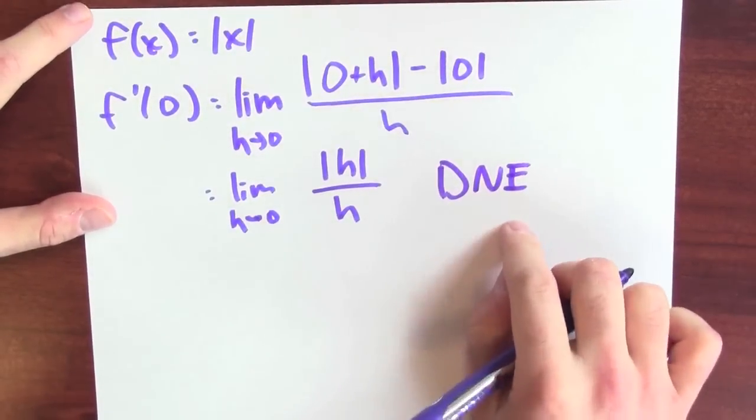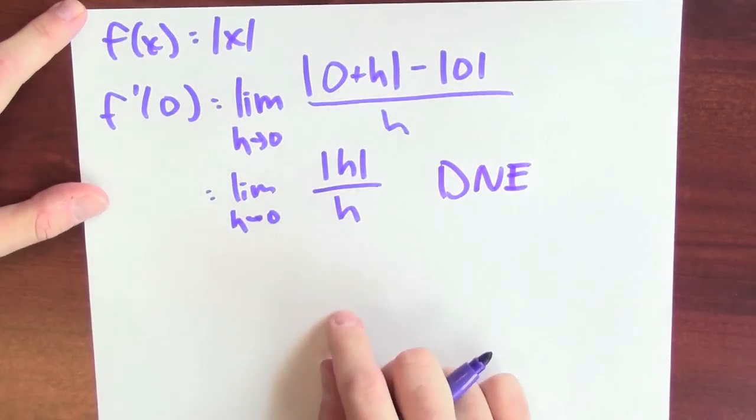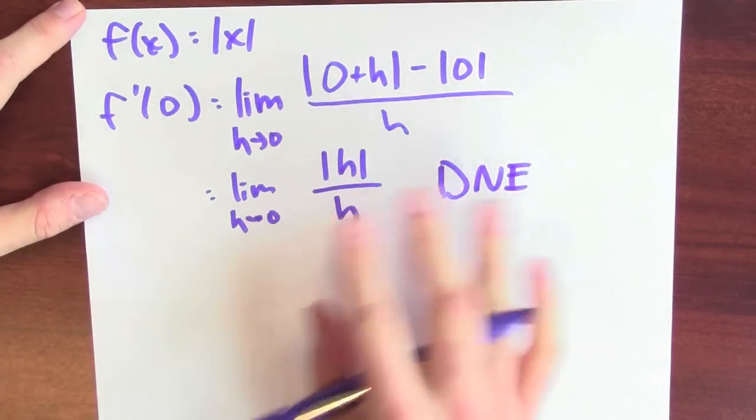And consequently, this function's not differentiable at zero. If you're wondering why that limit doesn't exist, well, think back to our two-sided, one-sided limit discussion from before.